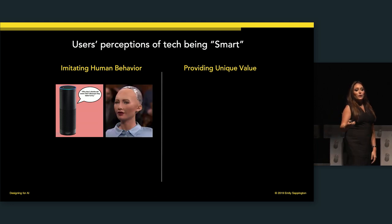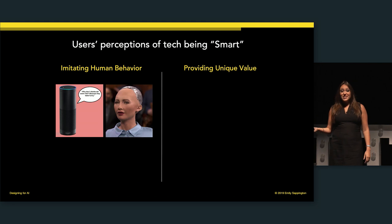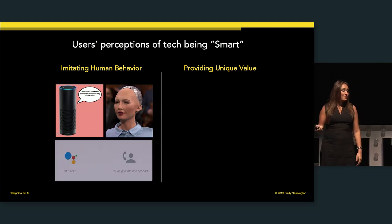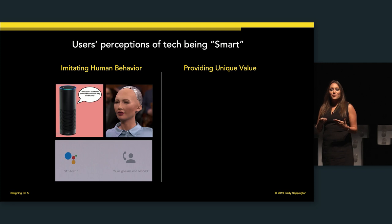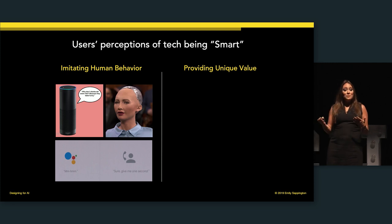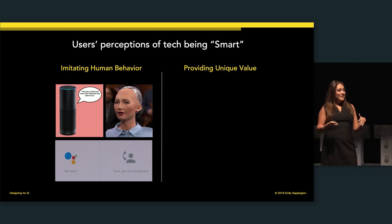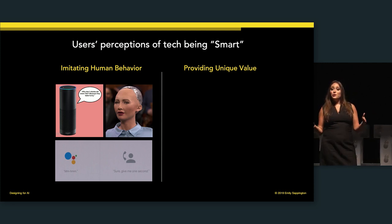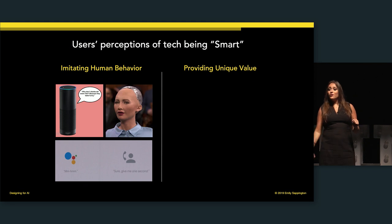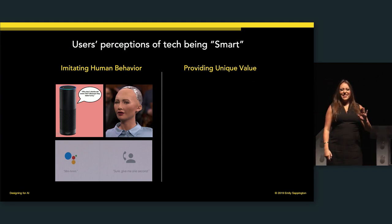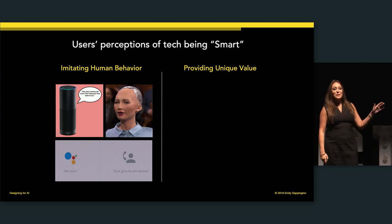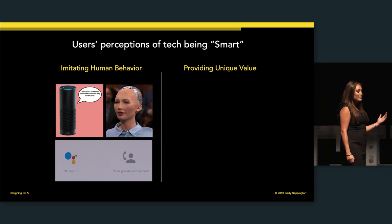First off is imitating human behavior — when Alexa tells a joke and you're like, 'Damn, that's pretty funny.' Or a humanoid robot that actually looks pretty realistic. Or maybe Google Duplex making a phone call — there's AI basically speaking to a human and when the human says 'just wait a minute,' the AI goes 'mm-hmm,' which is fantastic. These are the moments that are all about imitating human behavior.